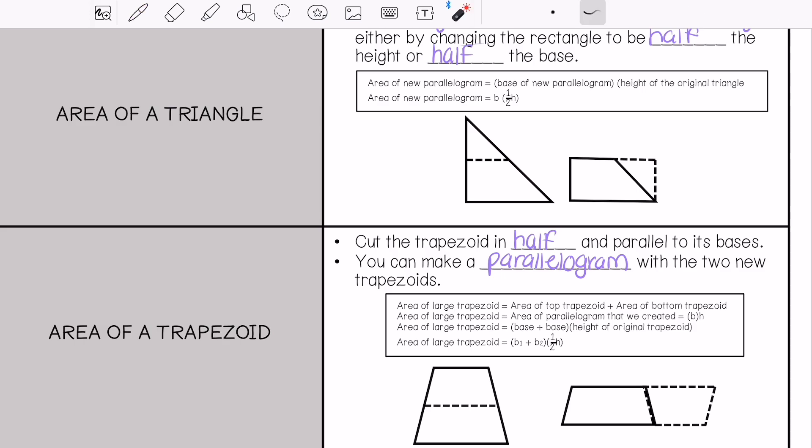The area of the large trapezoid plus the area of the bottom trapezoid is how we get the formula. From the area of the parallelogram, we use base times height. The area of the larger trapezoid is adding the two bases times the height of the original trapezoid. We get base 1 plus base 2 times half of the height.